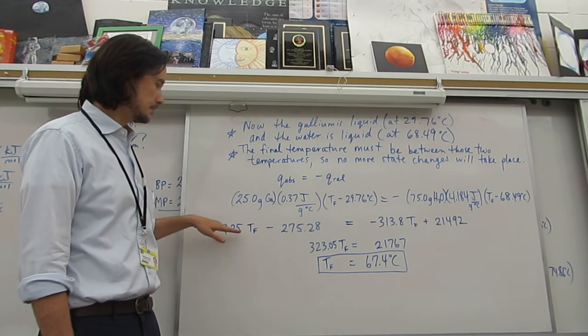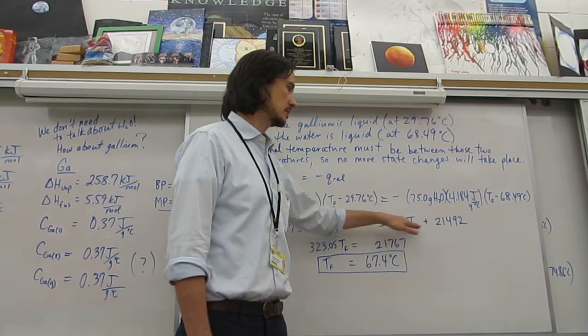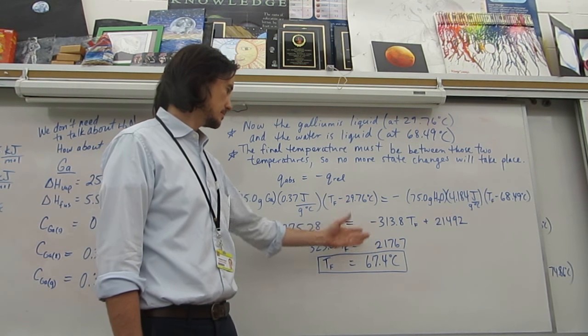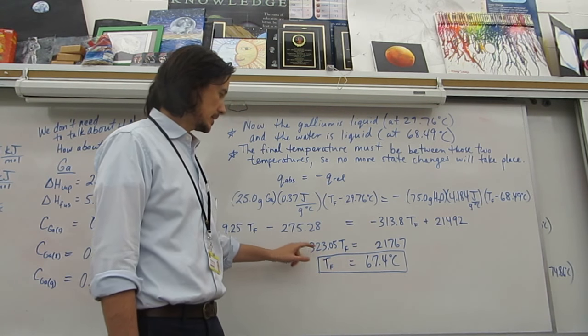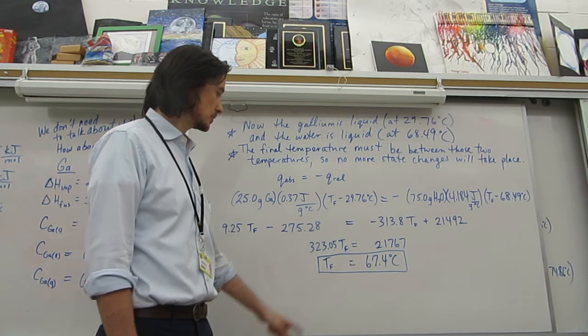In the end the joules cancel out and you get degrees Celsius. So we end up with, we combine our terms. This will be joules, this unit will be joules per degree Celsius. When you divide, the Celsius comes up and the joules cancel.